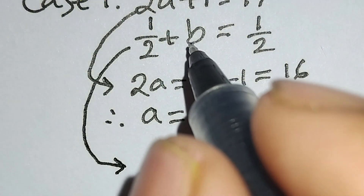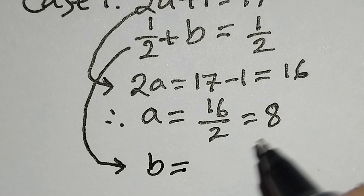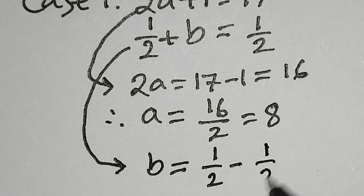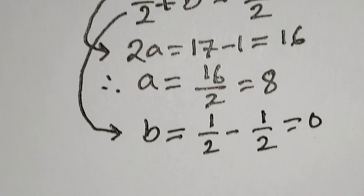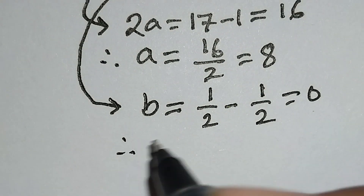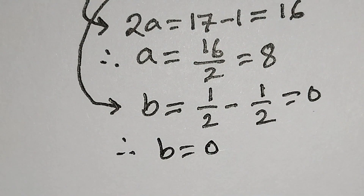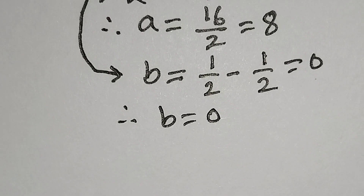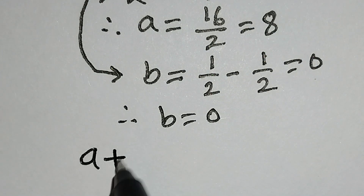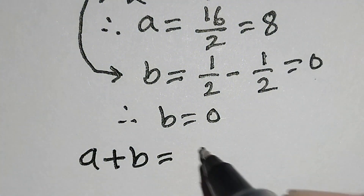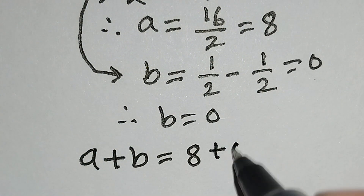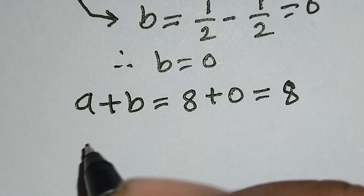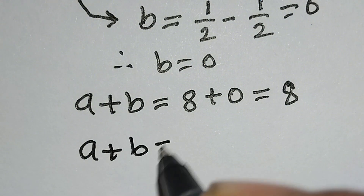Therefore b = 1/2 − 1/2 = 0, so b = 0. From Case 1, a = 8 and b = 0, so we can write a + b = 8.